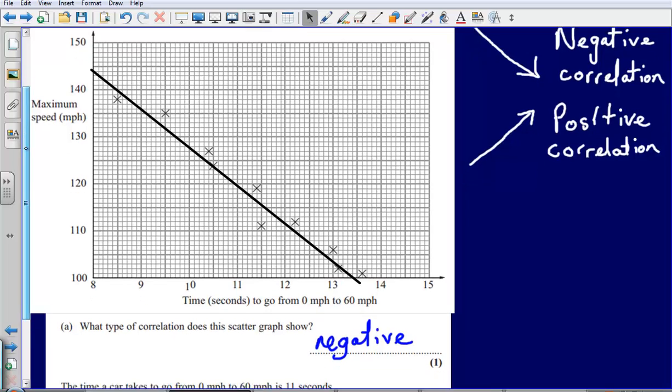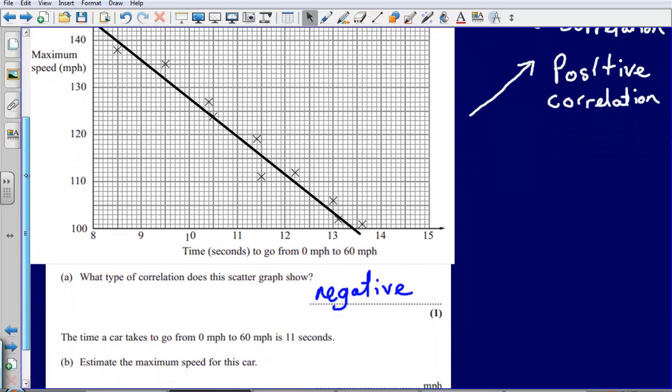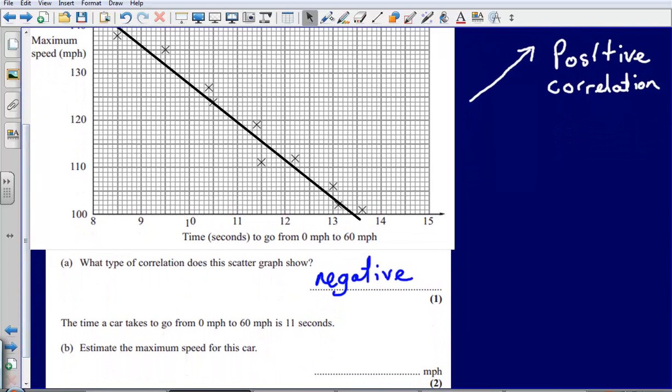So why have we drawn this line of best fit? Well this is going to help us to estimate what the maximum speed of a car would be where the car takes eleven seconds to go from zero to sixty.